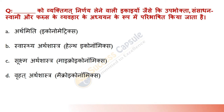Next question: Vyaktigat nirnay lene wali ikaiyaan jaise ki upbhokta, sansthan, swami aur firms ke vichar ke adhyan ko kya kaha jaata hai? Answer hai Microeconomics. Microeconomics studies the decisions of individuals and firms to allocate resources of production, exchange and consumption. It deals with prices and production in single markets, leaving economy-wide aggregates to macroeconomics.